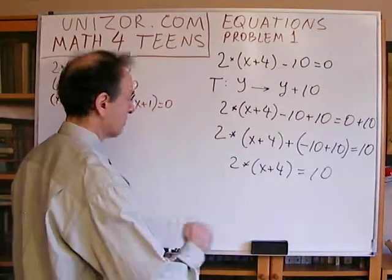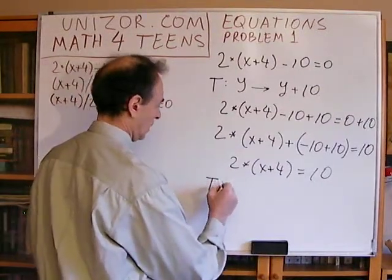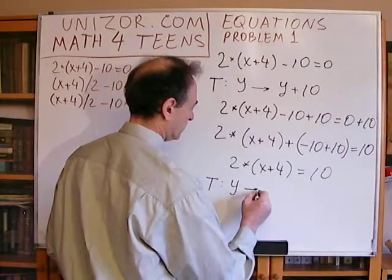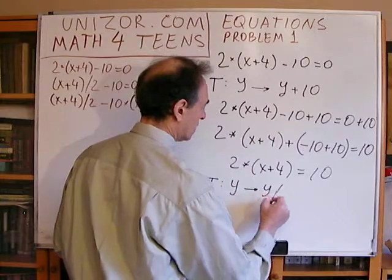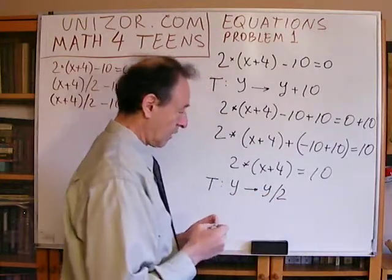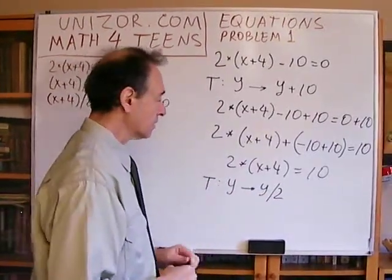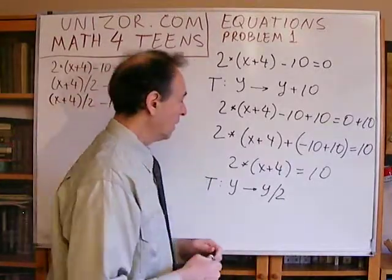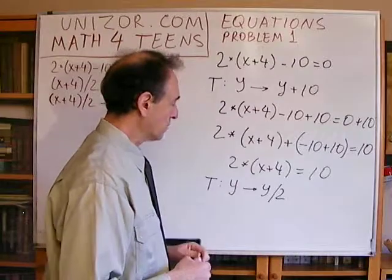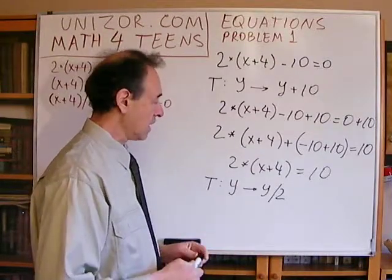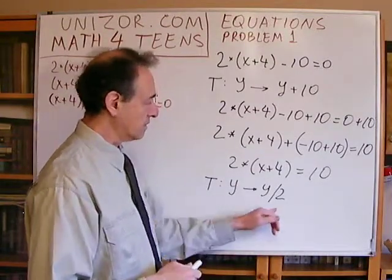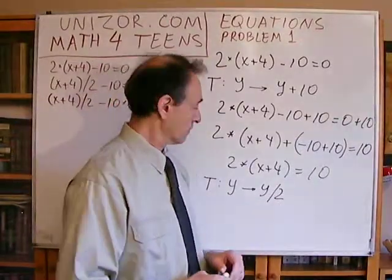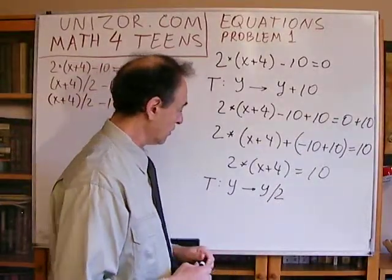We used an invariant transformation and the associative law of addition to get here. The next invariant transformation converts any number into that number divided by 2. Is this transformation invariant? Yes, because there is always the reverse one — multiplication by 2. Division is always invariant as long as the divisor is not equal to 0.